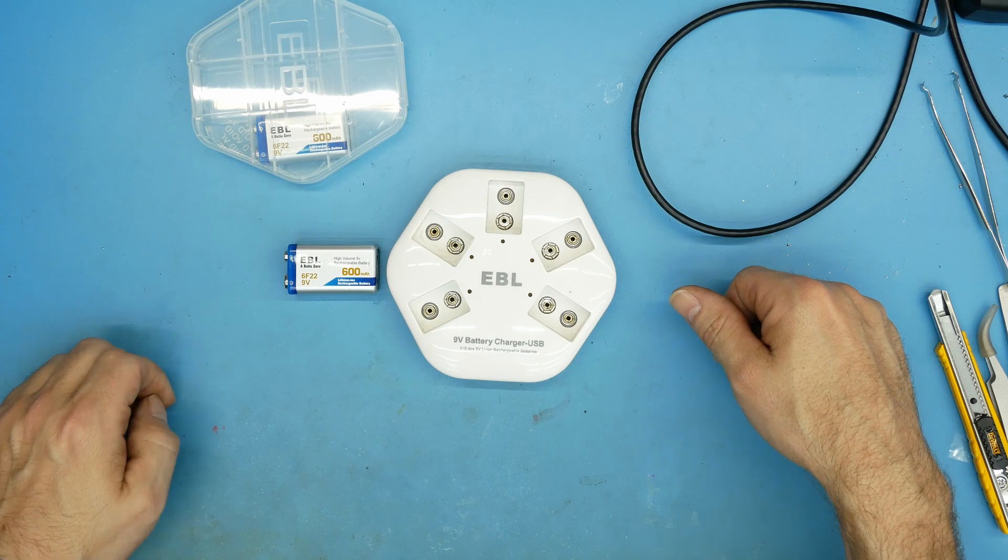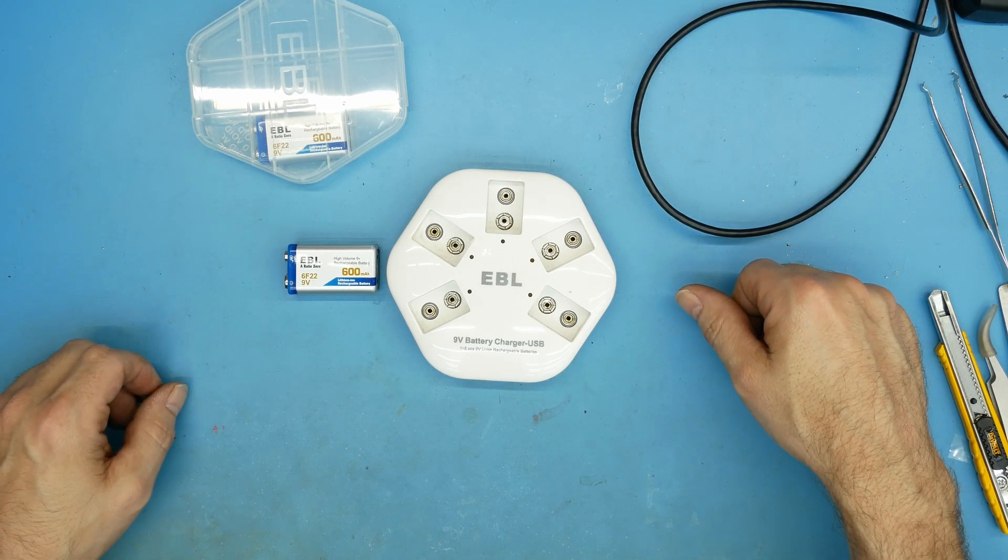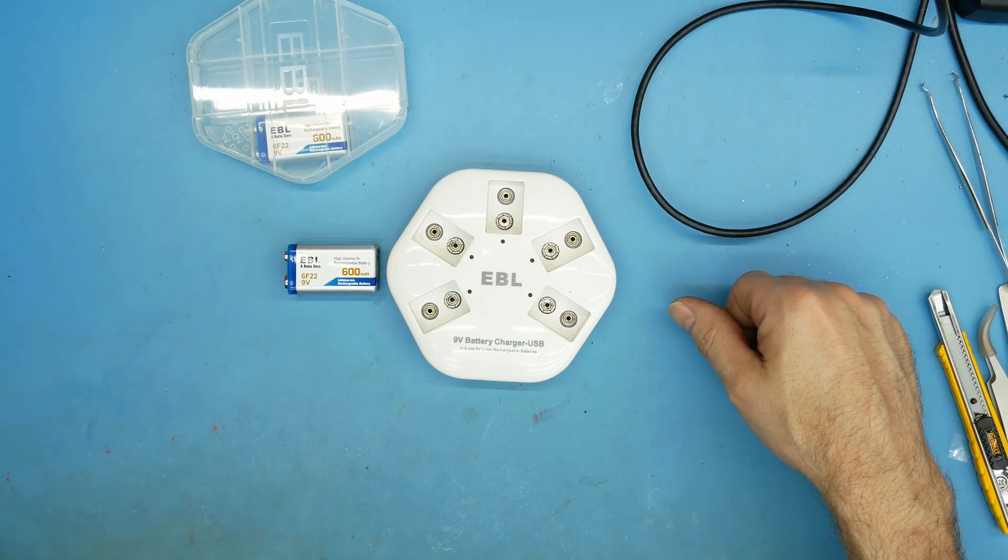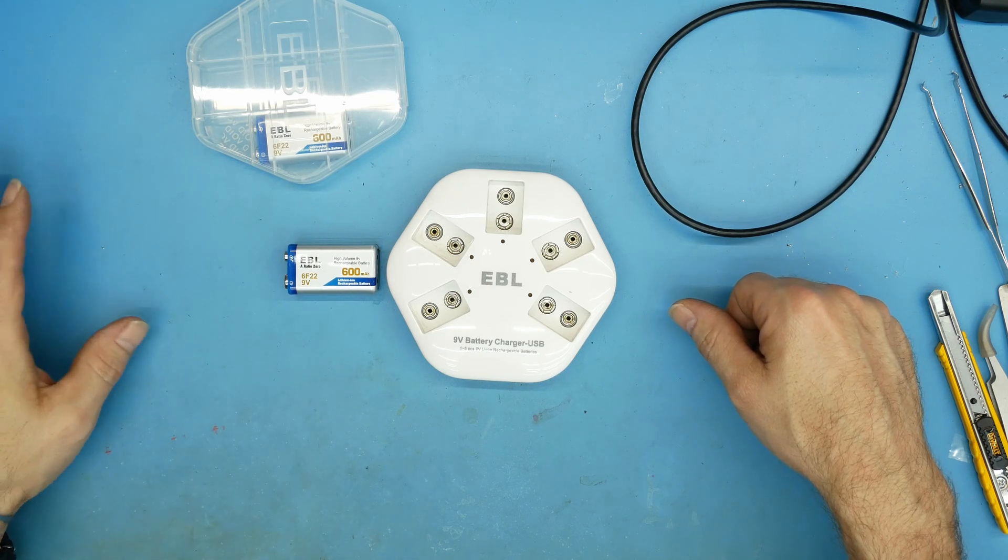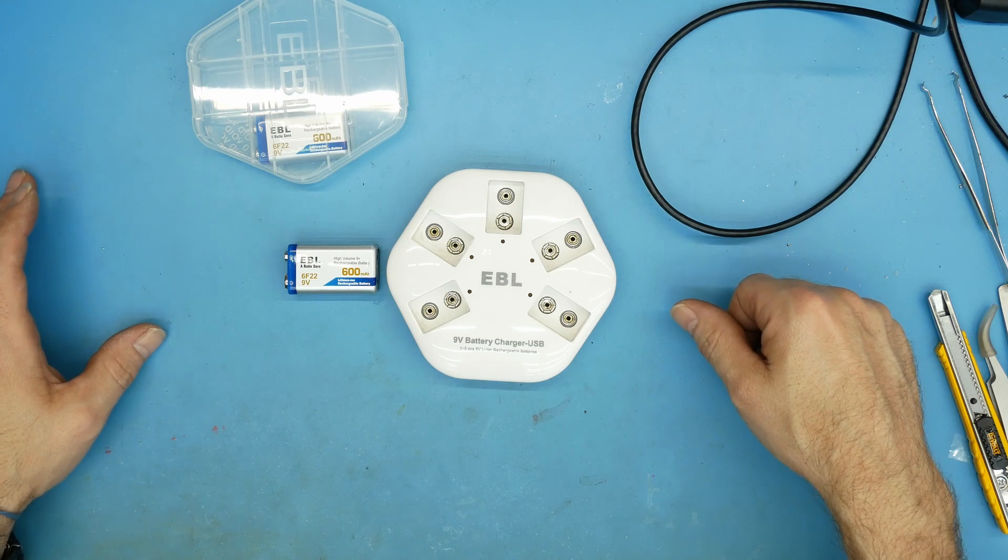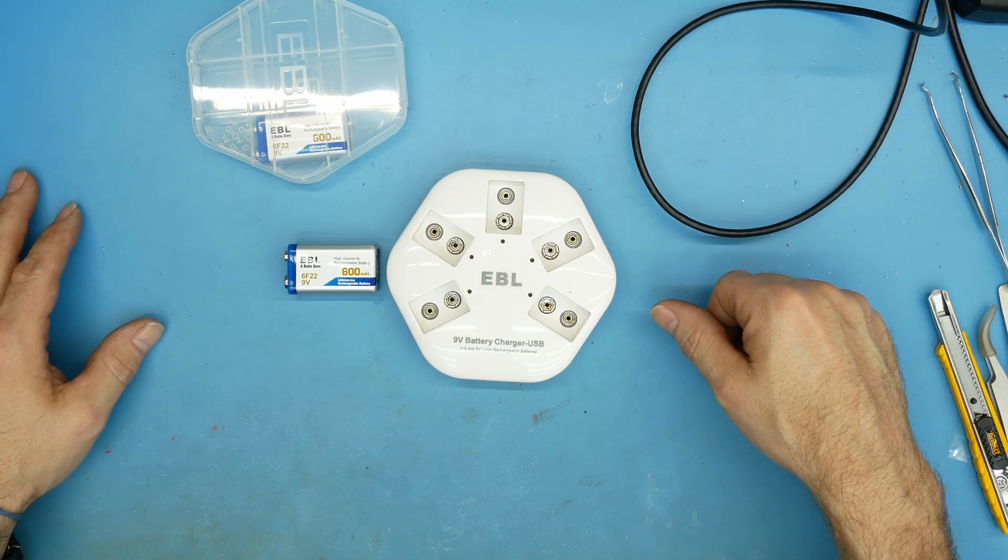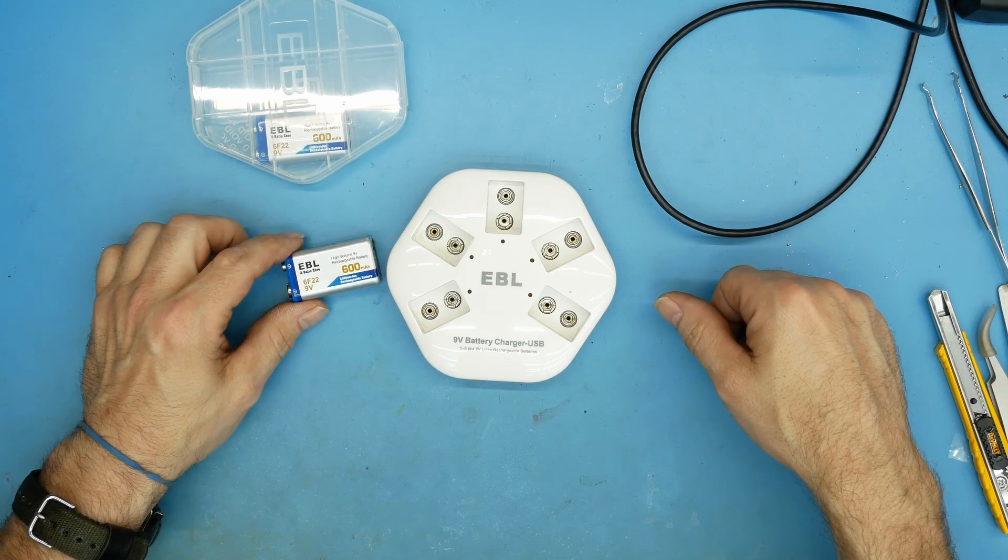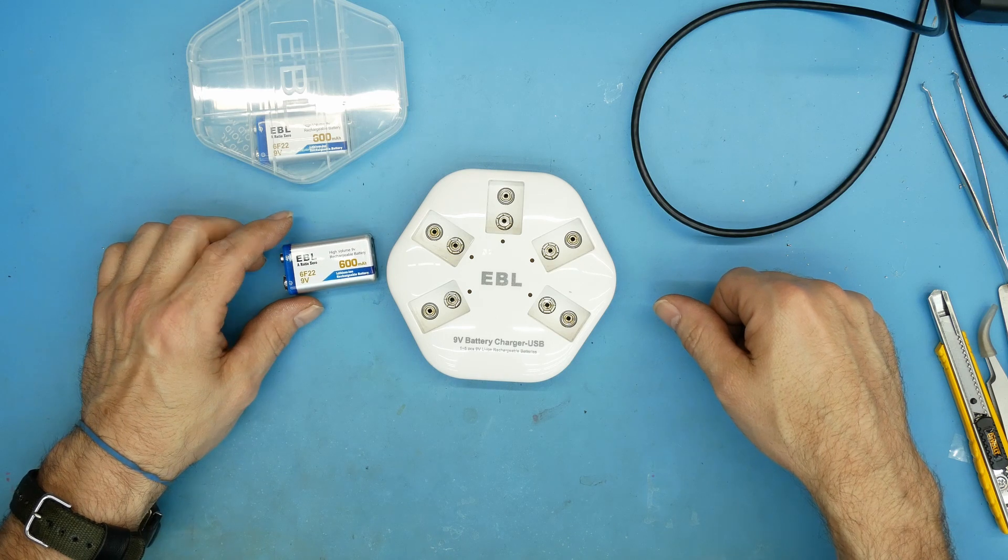Most 9-volt rechargeables are only in the 200 to 280 milliamp range, whereas an alkaline 9-volt is about 600 milliamps, so they're really disappointing. You have to charge them constantly and they always seem to be completely discharged. So about a year and a half ago I started looking for lithium-ion 9-volt batteries.